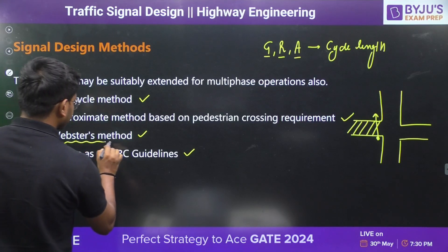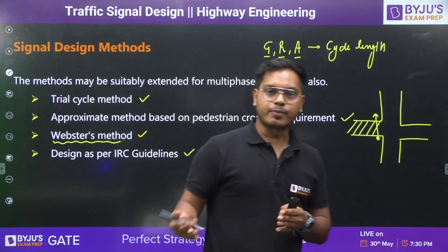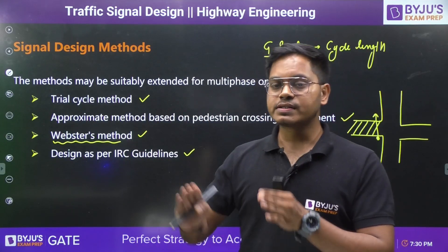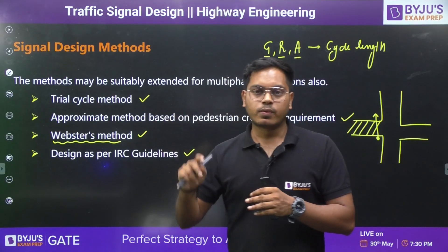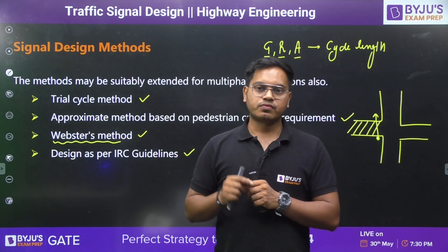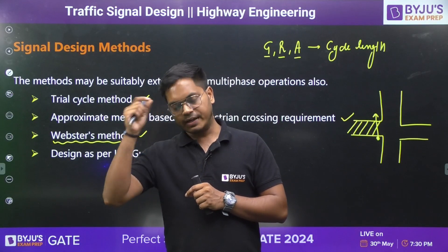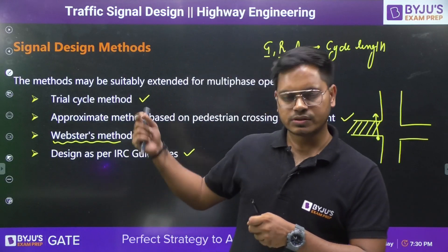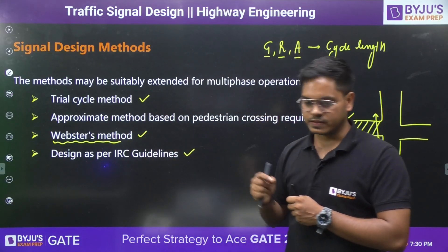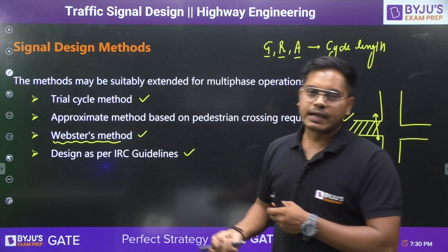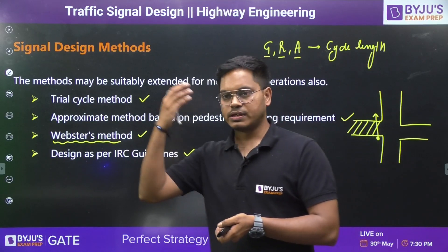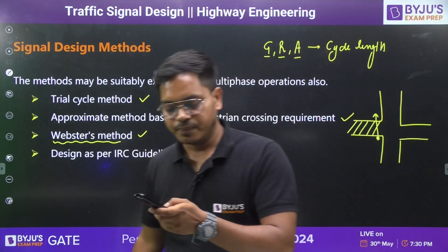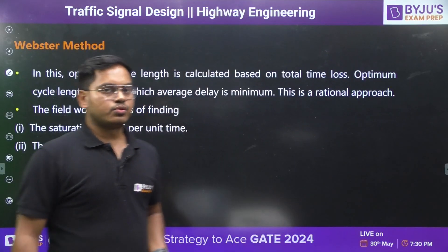Third is the Webster method. The Webster method is based on a rational approach to design a traffic signal. This Webster method is the one we are going to discuss in today's session. Webster method is designed keeping in mind that we have to reduce losses — we will talk about what those losses are. And the last method is as per the IRC guideline, where everything is given in the codal provision.